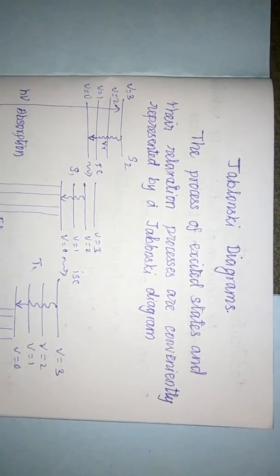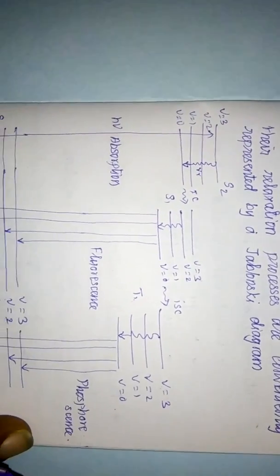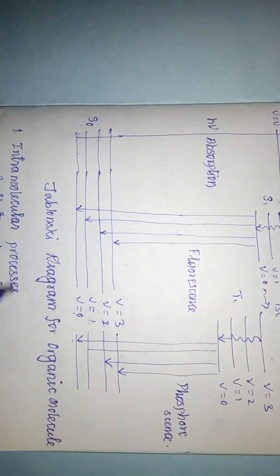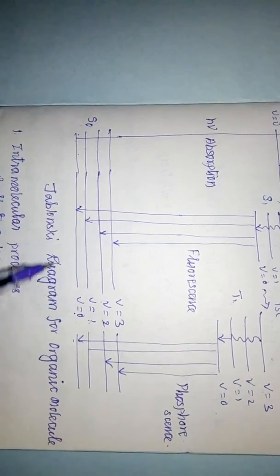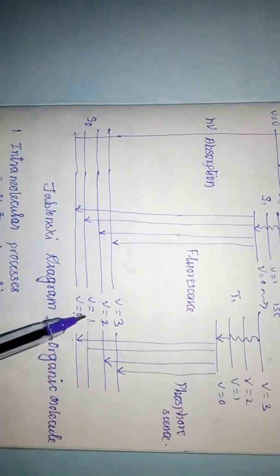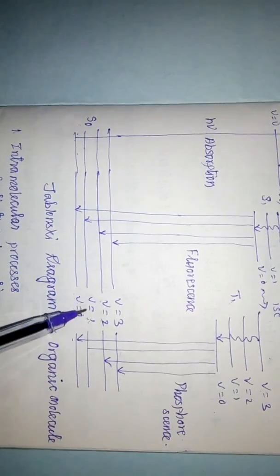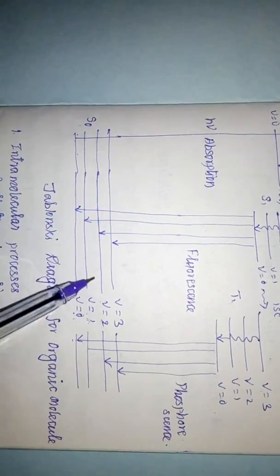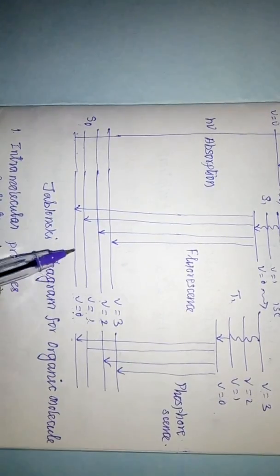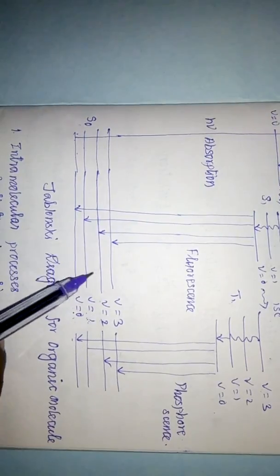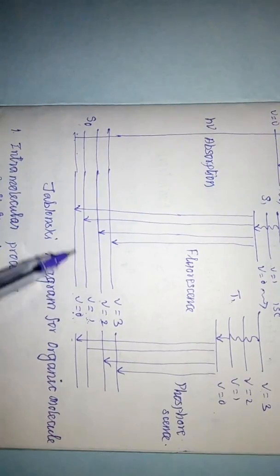First, let's clarify one thing. This is the electronic level — the ground electronic level. Within this electronic level there are vibrational levels: V=0 is the ground vibrational level, V=1 is the first excited vibrational level, V=2 is the second, and so on. In between each vibrational level there are many rotational levels, but the energy gap between rotational levels is very narrow so we are not discussing those here.